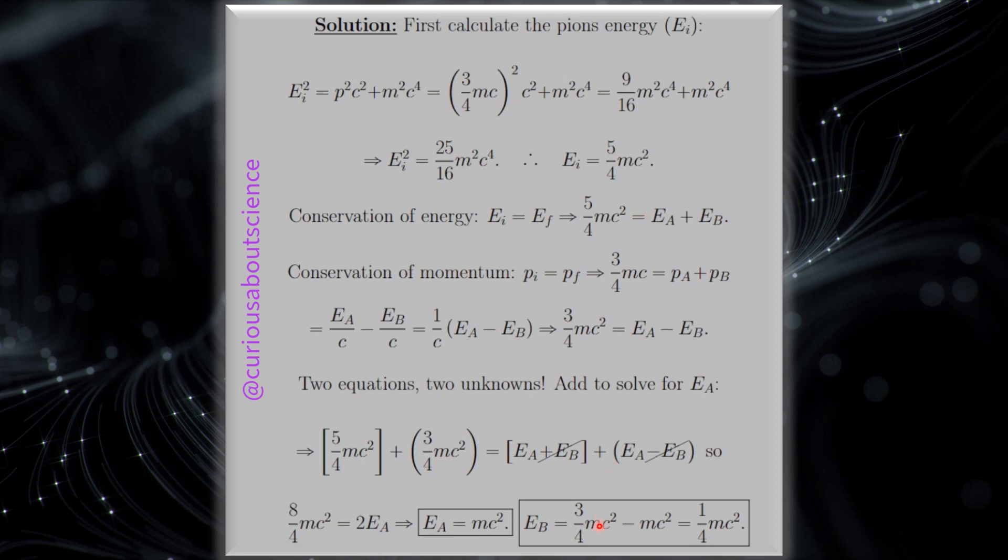But that being said, with that being the case, we have, no, 5, yeah, 5, that should be a 5. Excuse me, that's a copy-paste error. Because we have 5/4 MC squared minus EA.